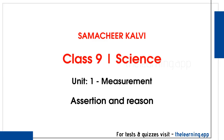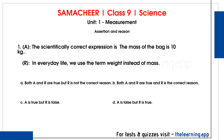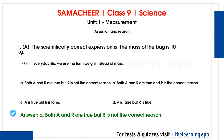Next is Assertion and Reason. First question: Assertion — the scientifically correct expression is 'the mass of the bag is 10 kg'. Reason — in everyday life we use the term weight instead of mass. Both assertion and reason are true, and the reason is the correct explanation for the assertion. The correct answer is option A.